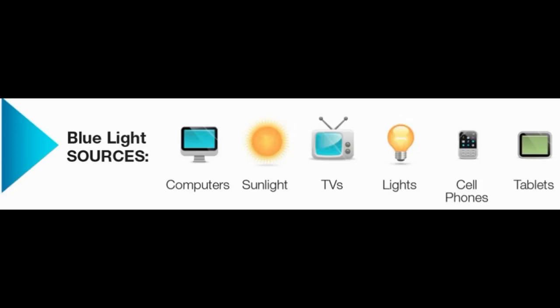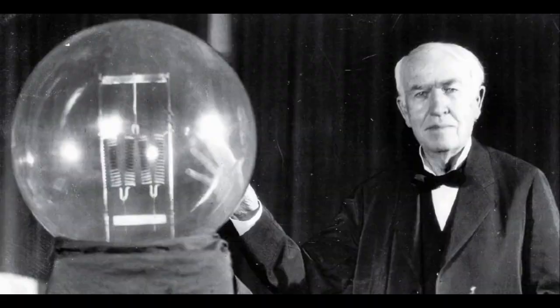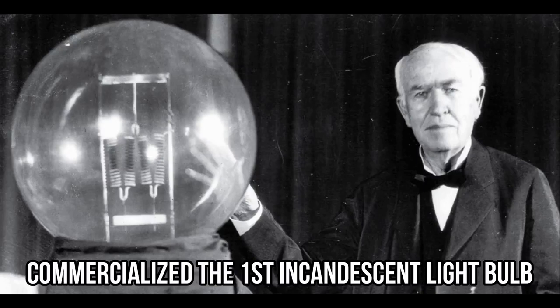Ever since the invention of the light bulb, our environment has many additional sources of blue light. Because of technology and new gadgets, we're getting exposed to more and more blue light for longer periods of time, which can offset the circadian rhythm and cause damage to our health. Blue light exposure at night and circadian mismatches are linked to many types of cancer, diabetes, obesity, heart disease, and Alzheimer's. After you learn about how light affects your body's biological processes, you will realize that it's really that serious.